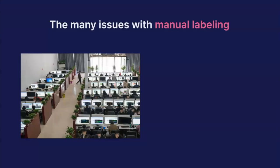However, there are many issues with manual labeling. First, it's very slow. We still need humans to go through the data one by one — it's linear, capped at human capacity, and cannot be made faster beyond a certain point. Secondly, it's expensive. It requires a lot of time from subject matter experts, and a lot of data needs to be labeled, making it a very costly technique.